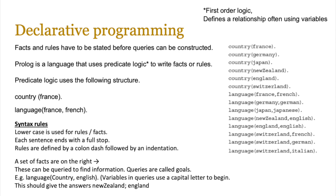Prolog is a language that uses predicate logic, which is basically first order logic, which normally uses variables to define relationships, and we use that to write facts or rules. Predicate logic uses the following structure: country, France — the variable is country, the data is France. Language, France, French basically means in the language fact there is a relationship between France and French.